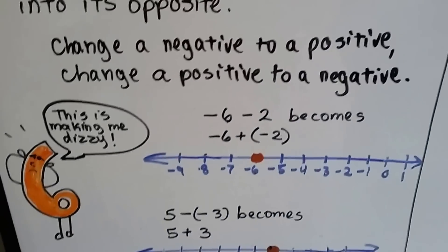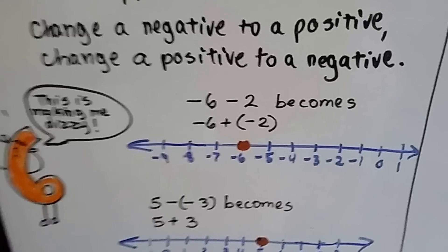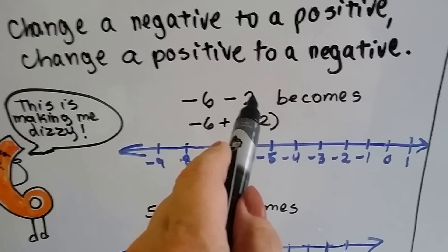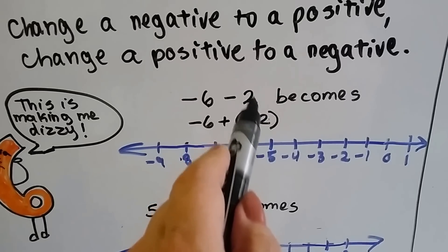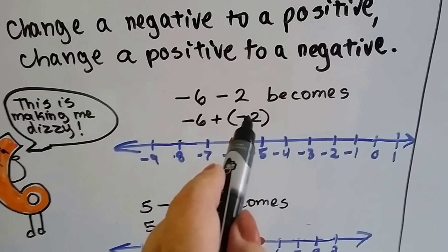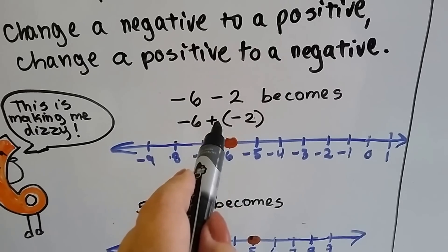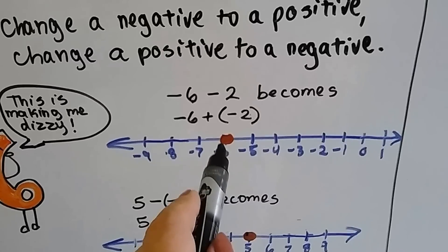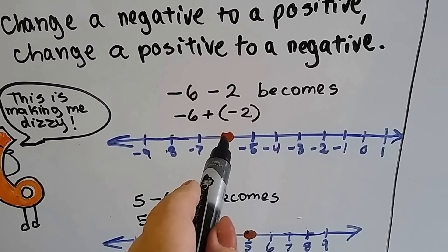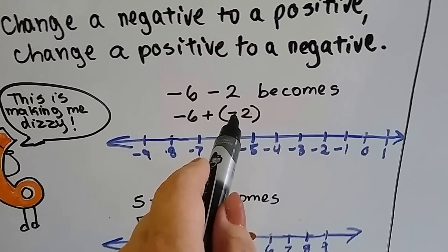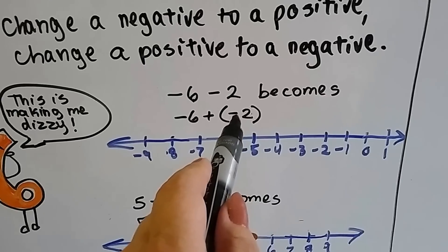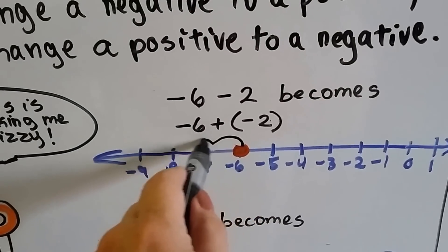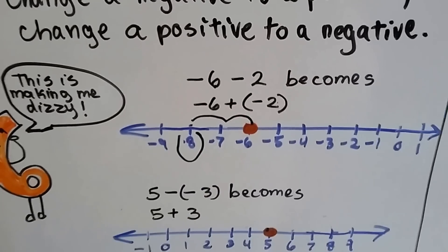I know this is confusing, so stick with me — we've got lots of examples. We have a negative 6 minus 2. I know that's a positive 2 because it's not in parentheses. So that positive 2 is going to become a negative 2, and that minus sign is going to become a plus sign. Now we've got negative 6 plus negative 2.